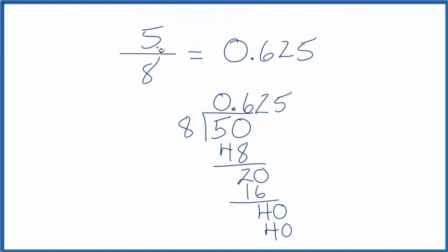So the fraction 5 eighths, that's equal to the decimal 0.625. And that's just like we found on the calculator.